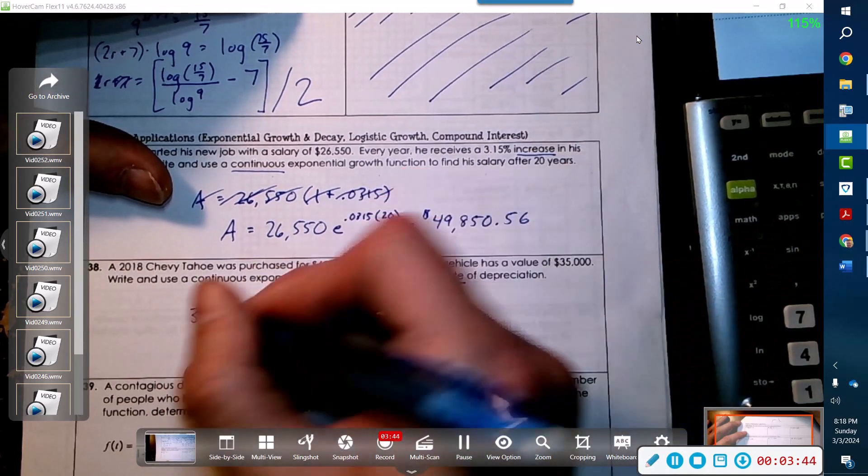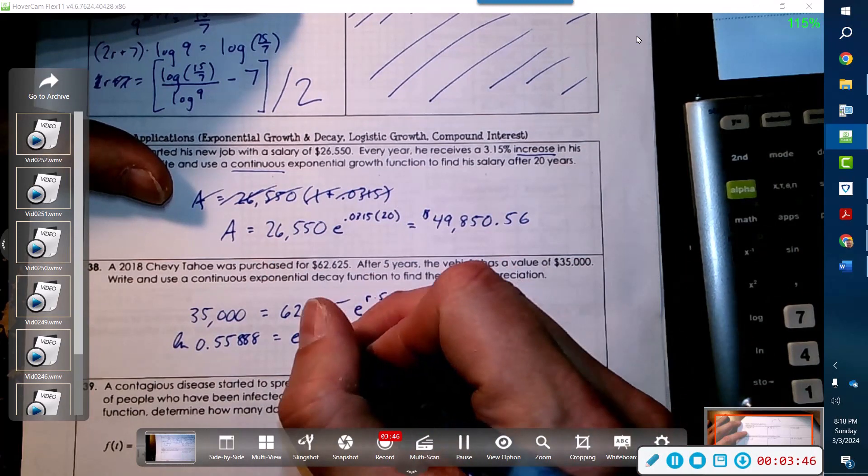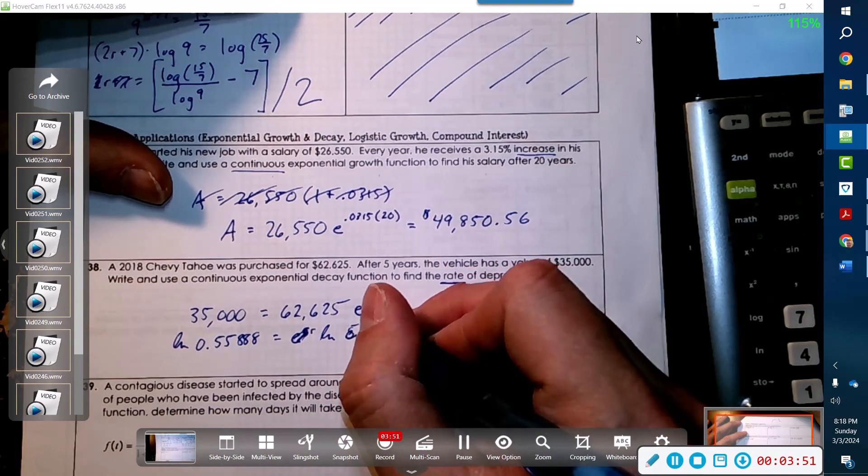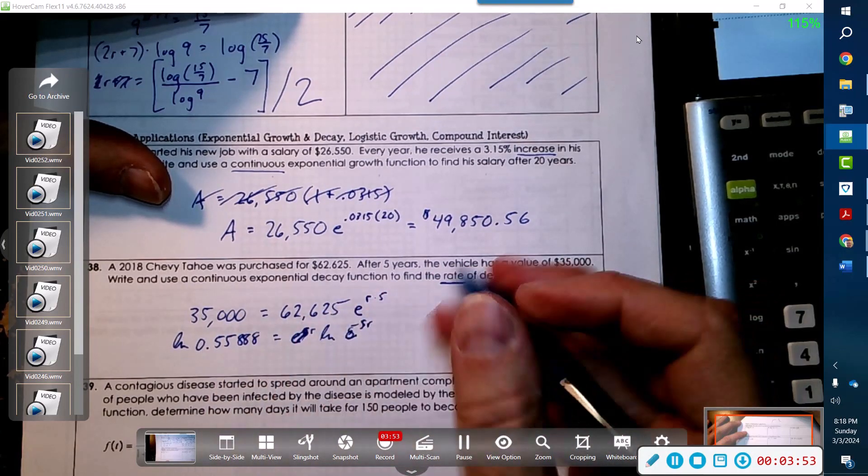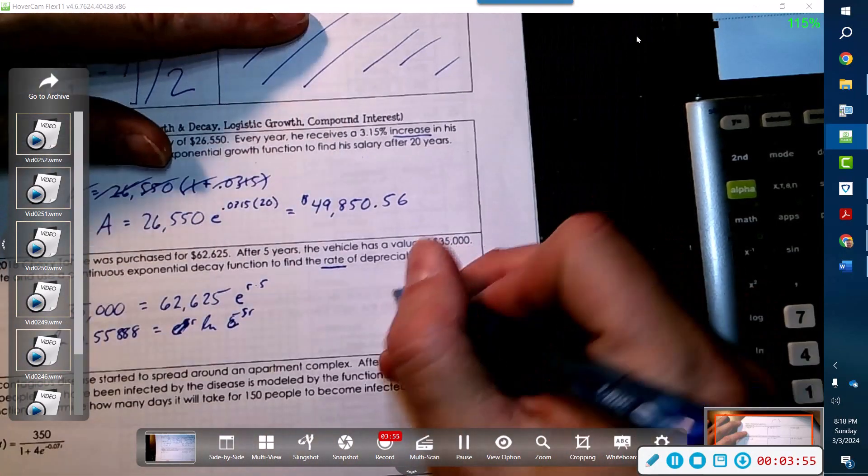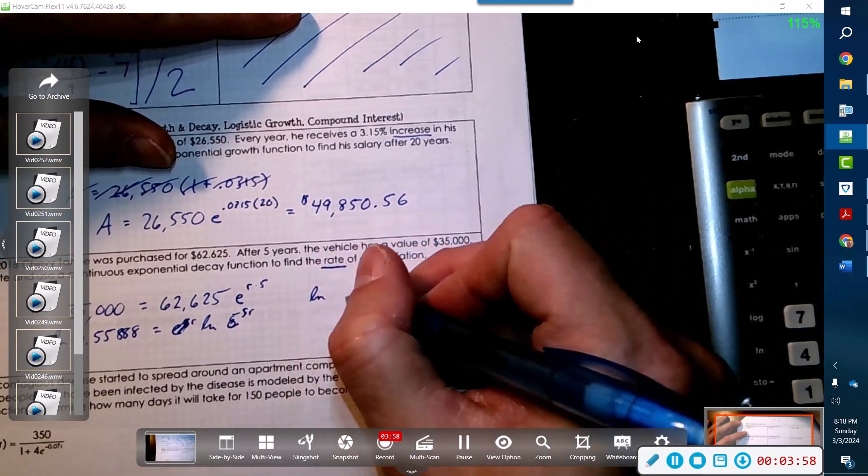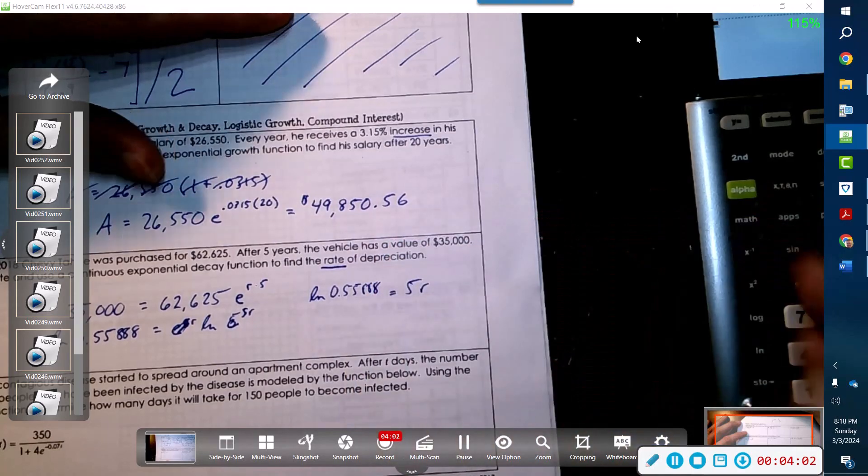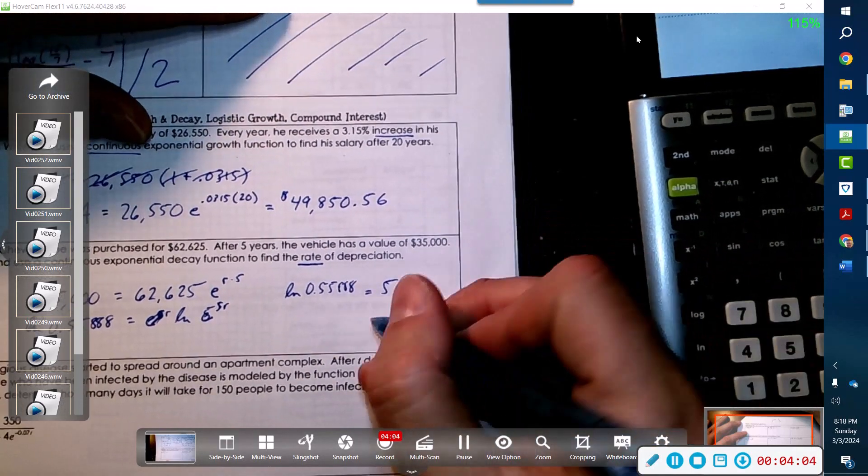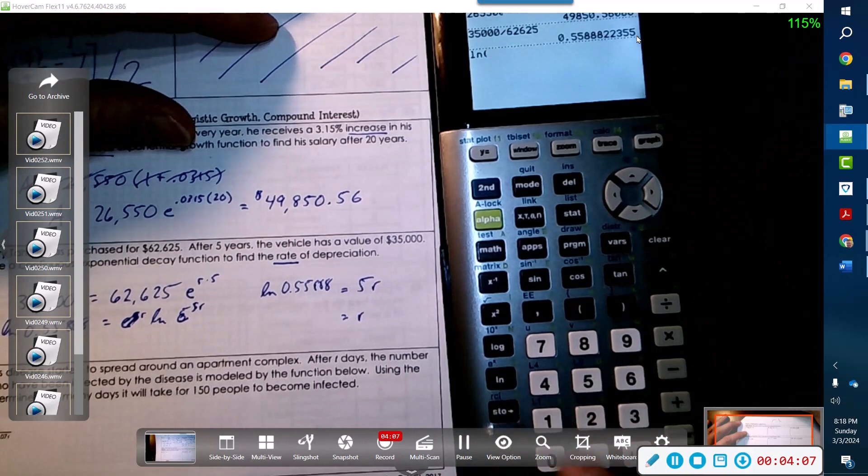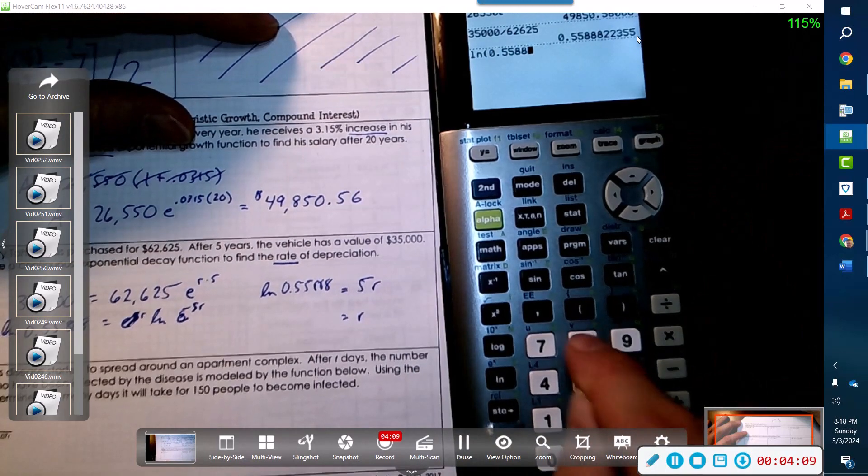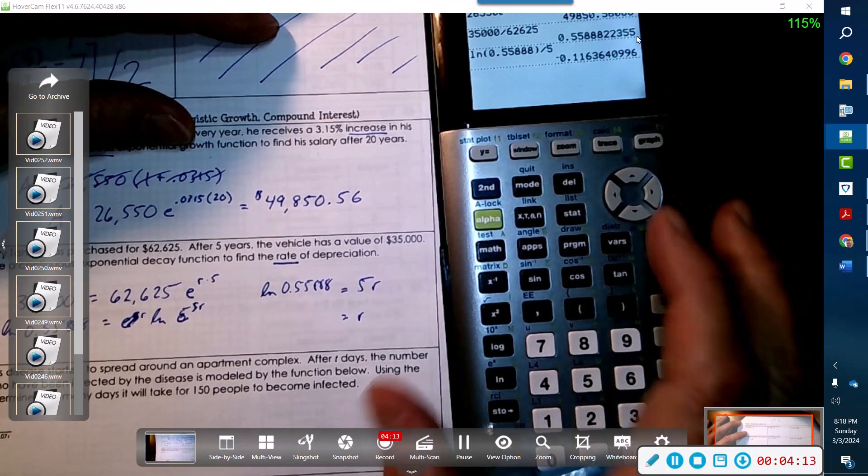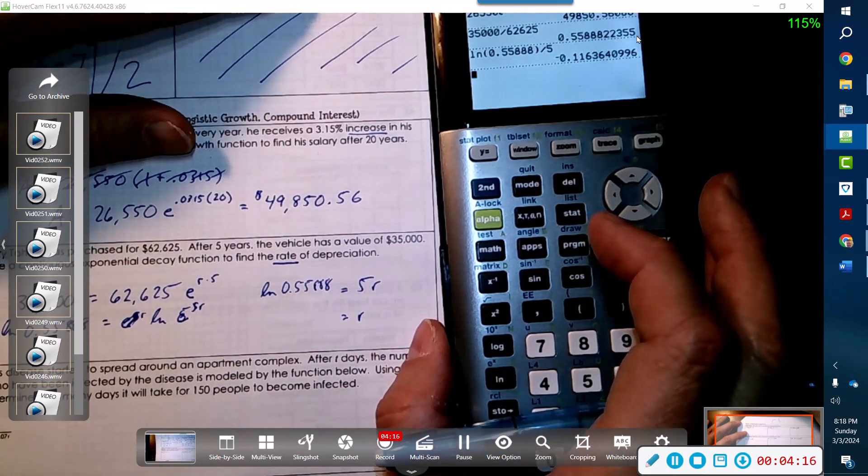We are ready to take the natural log of both sides so that we can solve for r. In our calculator we're going to figure out the ln of 0.55888, then divide by 5, and the rate is negative - we could say negative 12%.